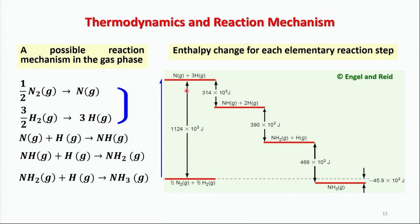Thermodynamics confirms that if such a step is involved, the overall kinetics is very slow because the rate constant is small — the Arrhenius equation has k ∝ exp(−Eₐ/RT). After the rate-determining first step, there is no further activation barrier and the system quickly converts to ammonia. The rate-determining step is this initial dissociation transition.